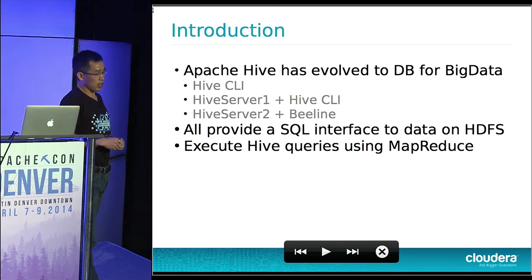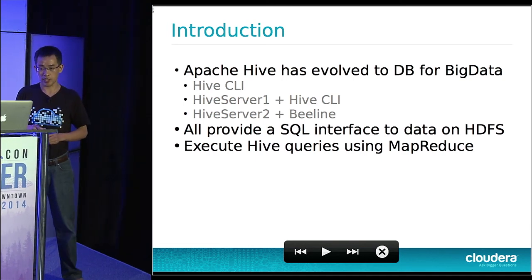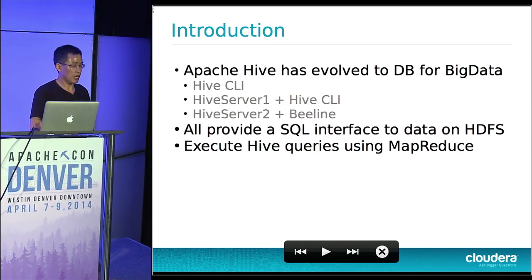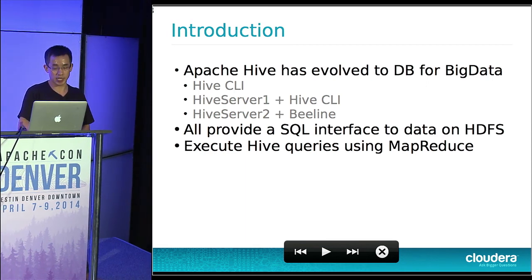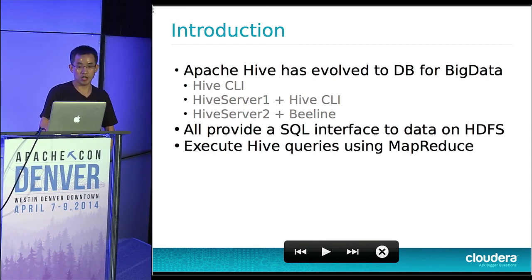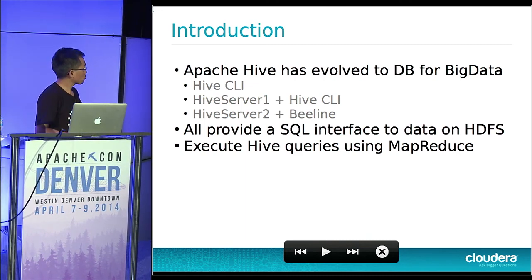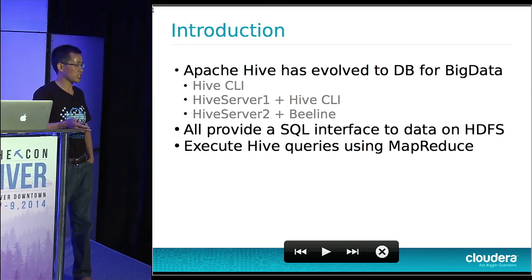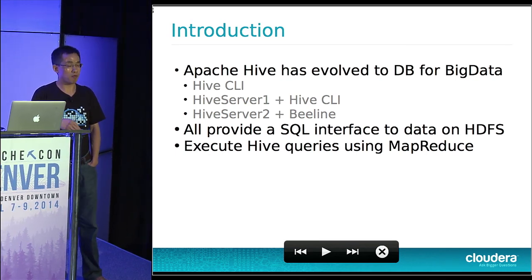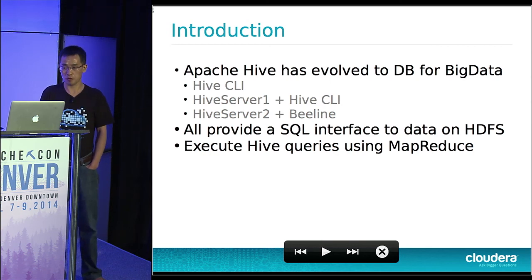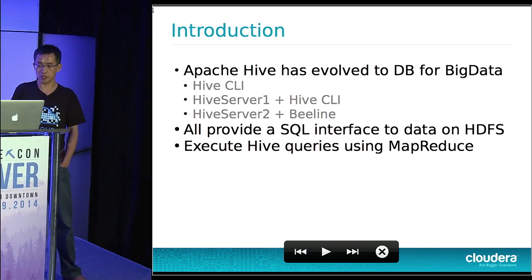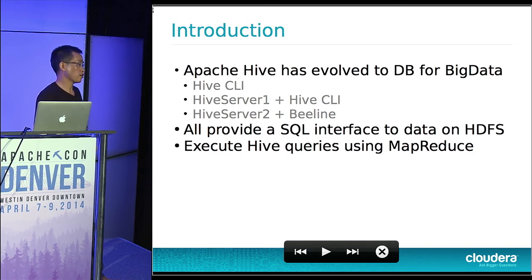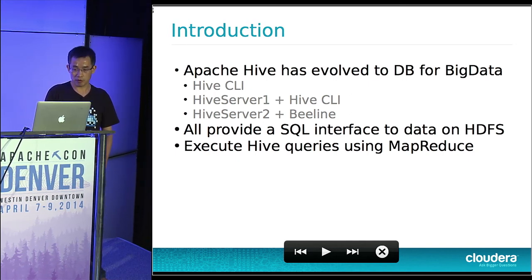However, HiveServer 1 also had a big problem, mostly around concurrency. So that's why the Hive community created HiveServer 2 recently, with Beeline as the new command line client. Looking at all three stages Hive has evolved through, they all provide a SQL interface to make it easy for users to leverage what Hadoop can provide, executing queries using MapReduce.